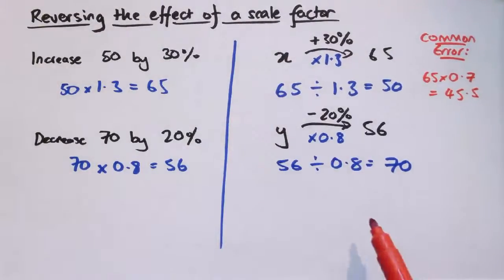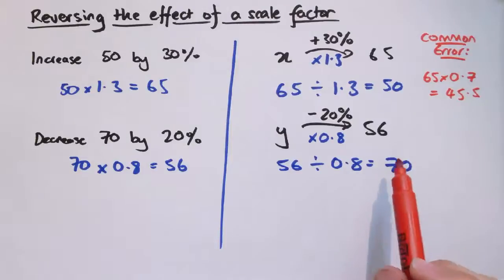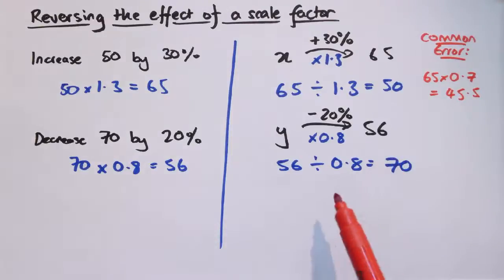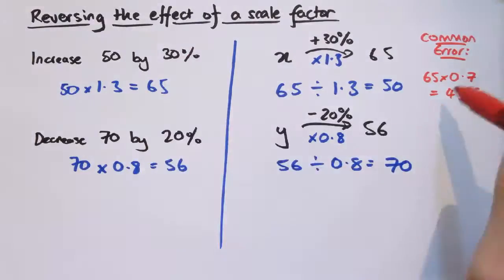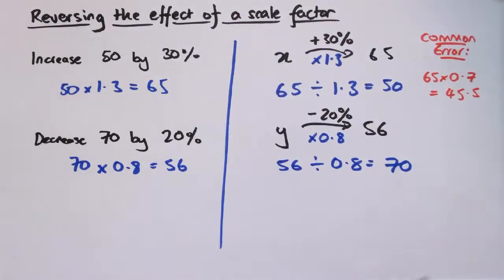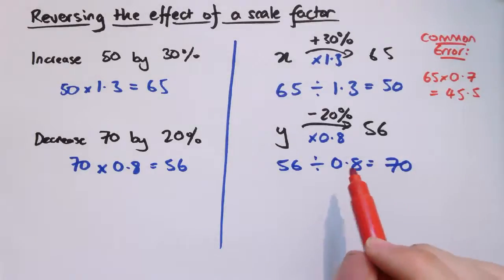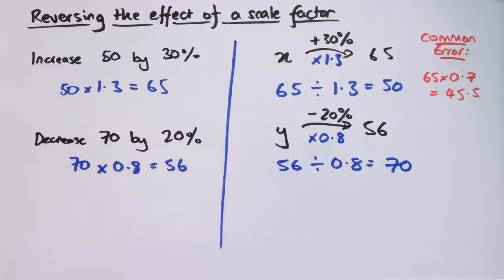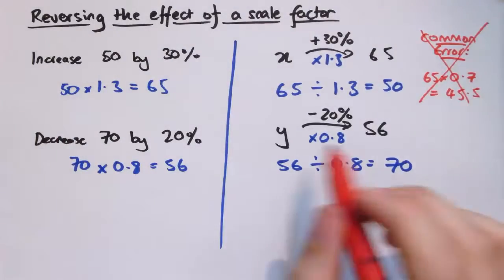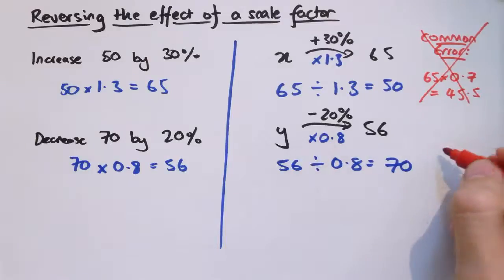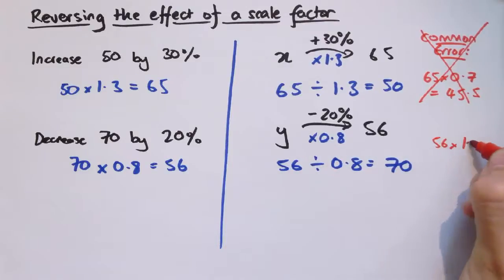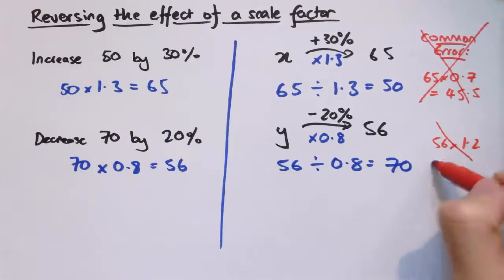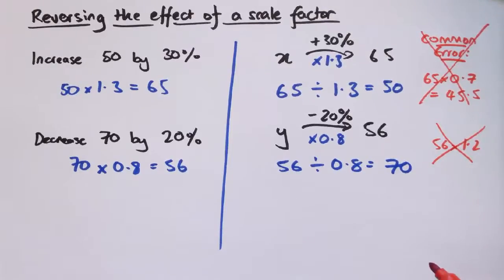As seen in the previous videos — look back to the first one on this topic — applying an increase of 30% followed by a decrease of 30% doesn't get you back to where you started, because the decrease of 30% is 30% of this larger value of 65, whereas the increase was 30% of the original value of 50. Similarly, the equivalent mistake here would be to try 56 times 1.2, which gives an incorrect answer. Totally wrong.